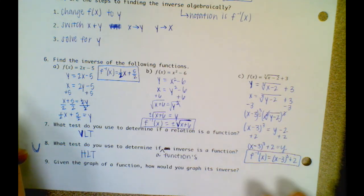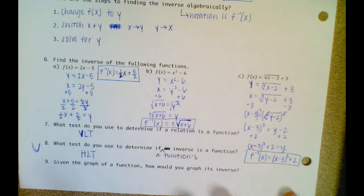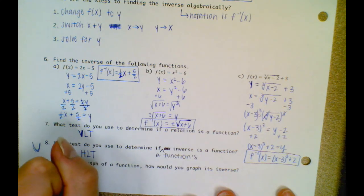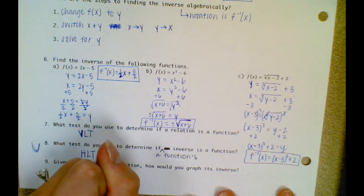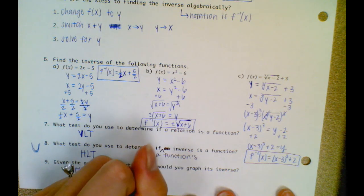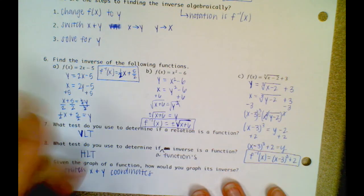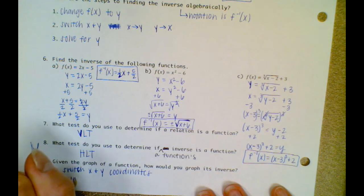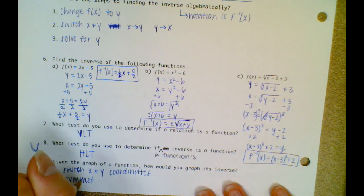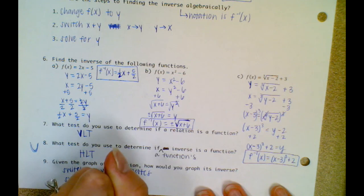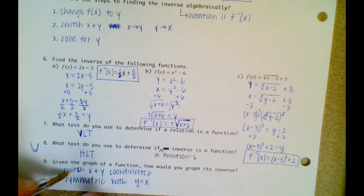Given the graph of a function, how would you graph its inverse? All you guys would have to do is switch the x and y coordinates. And don't forget, graphically, inverse functions are reflective — or you could say symmetric — with the line y equals x. So switch the x and y coordinates, or just make it symmetric with the line y equals x.